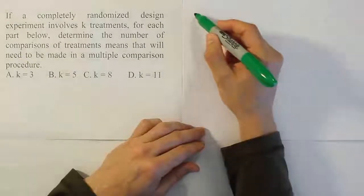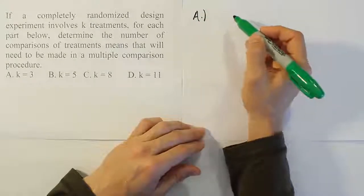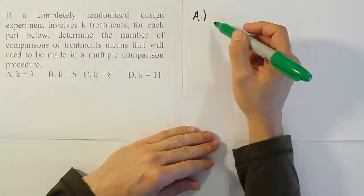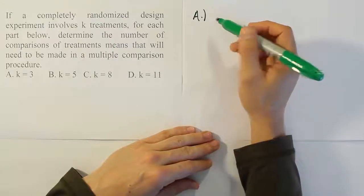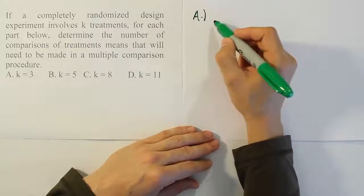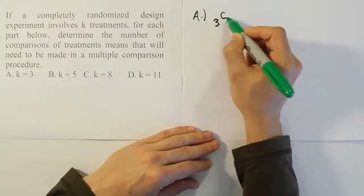What you want to do for this is actually pretty simple. There's a combinations formula from your earlier stats training. You're basically pairing up these means two at a time. So if you have k of them, three of them, you're doing 3 choose 2.